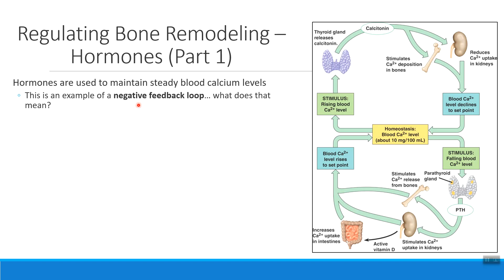When we talk about a negative feedback loop, what we're saying is: if I have a stimulus — a change — I'm going to try to undo that change, or do the opposite. So if my blood calcium gets too high, I'm going to try to drop it back down. If my blood calcium gets too low, I'm going to try to raise it. In a negative feedback loop, we try to do the opposite of what we're detecting to get us back to normal.